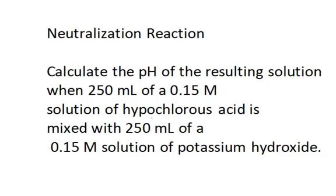Calculating the pH after a neutralization reaction. Calculate the pH of the resulting solution when 250 milliliters of a 0.15 molar solution of hypochlorous acid is mixed with 250 milliliters of a 0.15 molar solution of potassium hydroxide.